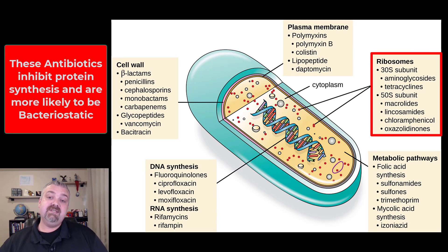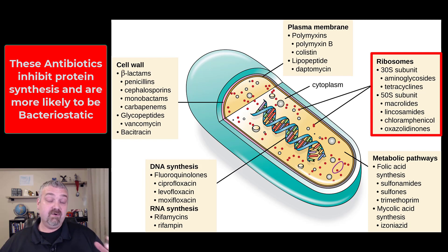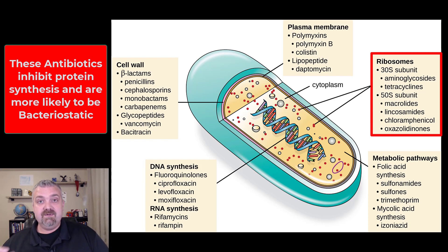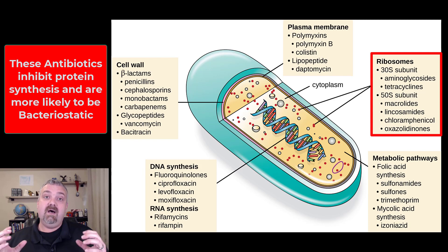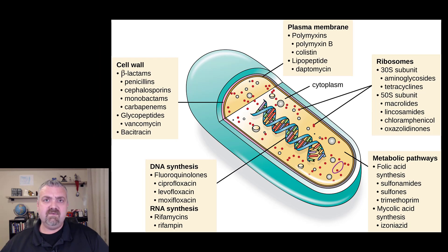Next group: the ribosome inhibitors. Generally speaking, unless you get to a real high dose, these are more likely to be bacteriostatic than your cell wall inhibitors. Cell wall inhibitors work because as cells are dividing, their cells get weaker and weaker and then rupture or disappear, killing the bacteria. The ribosome inhibitors — the protein synthesis inhibitors — are generally just slowing down or stopping the production of protein, so they might not kill an individual microbe, but they'll certainly slow down or stop their growth.